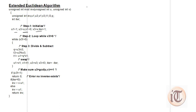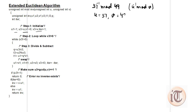For example, suppose we have to find the inverse of 37 mod 49. This can be solved by the Extended Euclidean Algorithm because it looks like u inverse mod v. So u equals 37 and v equals 49. According to step one initialization: u1 = 1, v1 = 0, and iteration = 1.